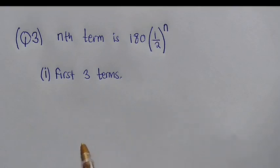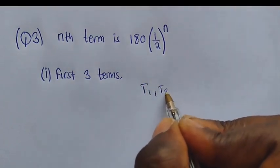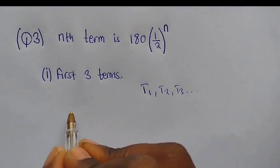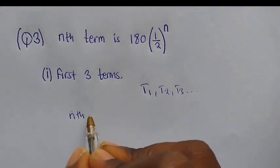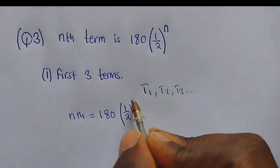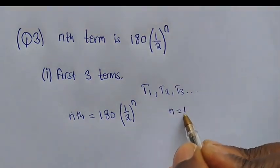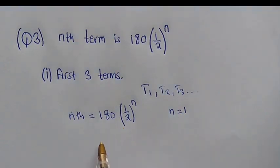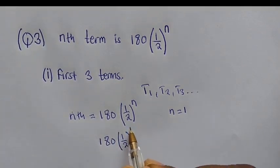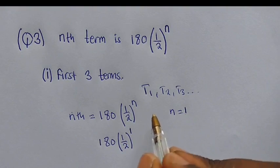So since they want us to find the first three terms, if you have the sequence, it will be like this: term 1, term 2, term 3. So these are the first three terms. What we are going to do is write the nth term. So the nth term that we have is 180 in brackets, (1/2) raised to the power of n. To find the first term, n is going to be 1 — this is the position of the term. The first term, which is T1.